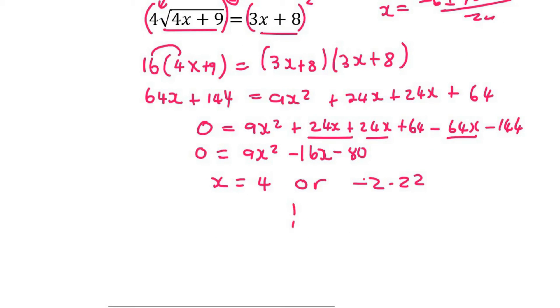So I'm going to divide my page in half. So if x is 4, let's check if that works. So if x is 4, then the left hand side, you're going to plug 4 into the original equation. So it's going to be 4 square root of 4 times 4 plus 9. And I'm just going to type that on my calculator.